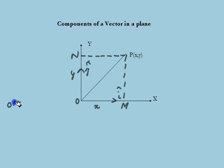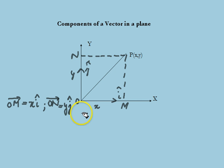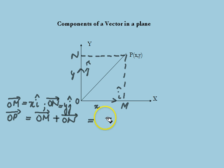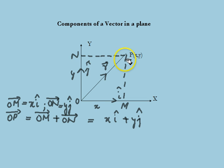Therefore vector OM is equal to x into unit vector i, and vector ON is equal to y into unit vector j. Now using the parallelogram law, the position vector of point P is given as vector OP equal to vector OM plus vector ON. Substituting these values, we have the position vector of point P as x into unit vector i plus y into unit vector j. If r vector represents the position vector of point P, then vector r is equal to xi plus yj.